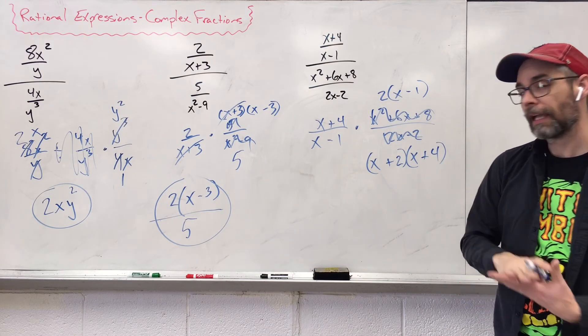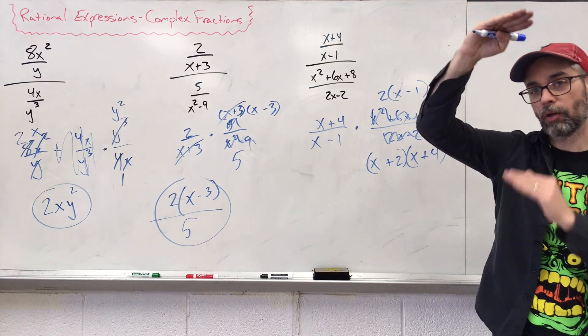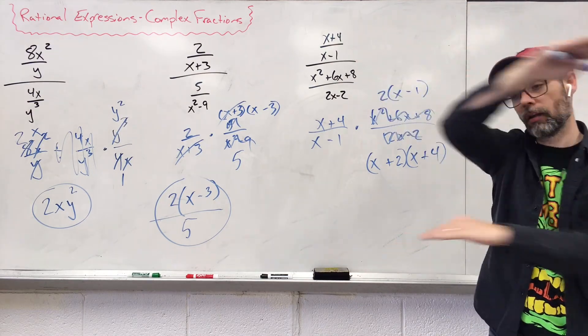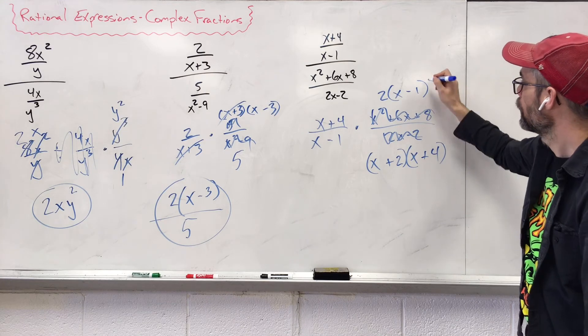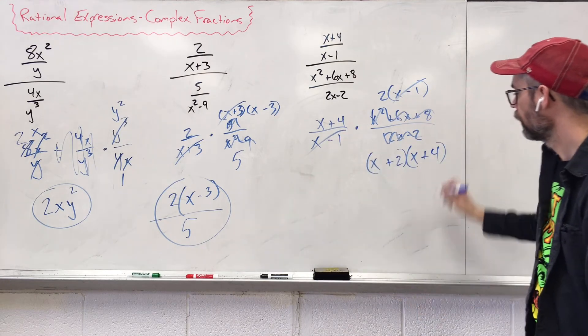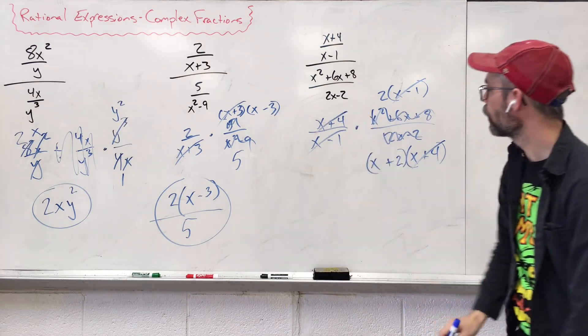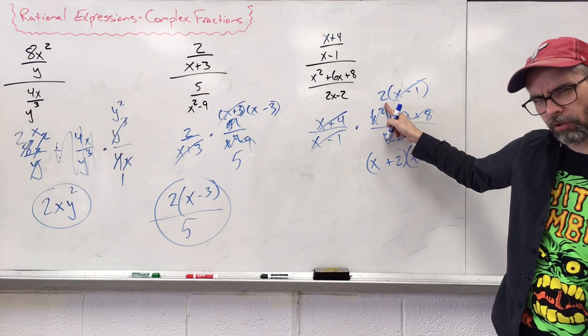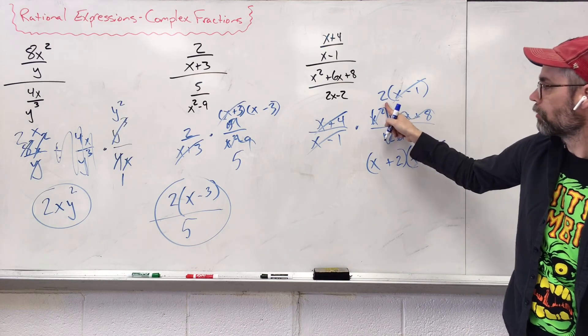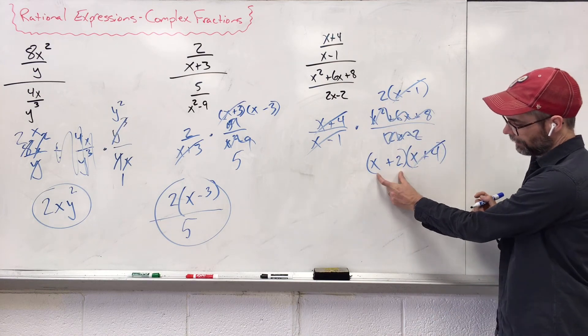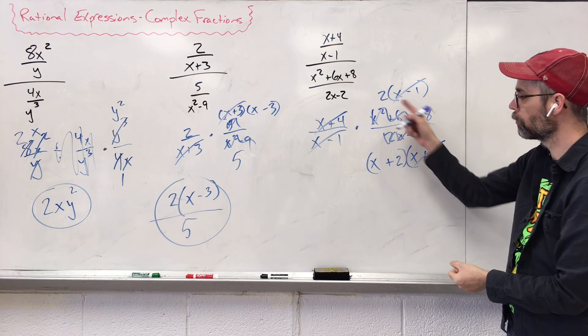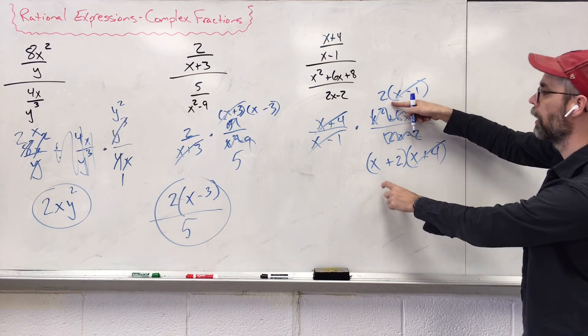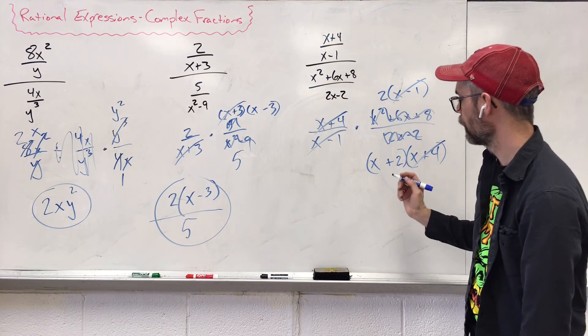Now let's start canceling out anything up top, anything on bottom, even if they're separated. It doesn't matter. x minus one, x minus one, x plus four, x plus four. Can that two and that two cancel? Uh-uh. This is all by itself. This two is kind of stuck with that x, so it's like binomial with binomial or monomial with monomial. Can't do monomial, binomial.